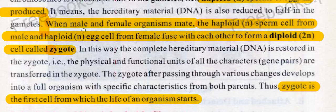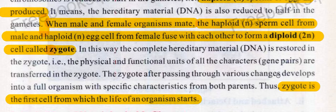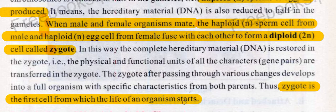Now one cell is from the male and the other from the female, and through their combination the hereditary material is restored. The physical and functional units of all characters — the gene pairs — are transferred into the zygote. The complete characters are transferred, and the zygote, after passing through various changes, develops into a full organism with specific characteristics from both parents. Thus the zygote is the first cell from which the life of an organism starts.